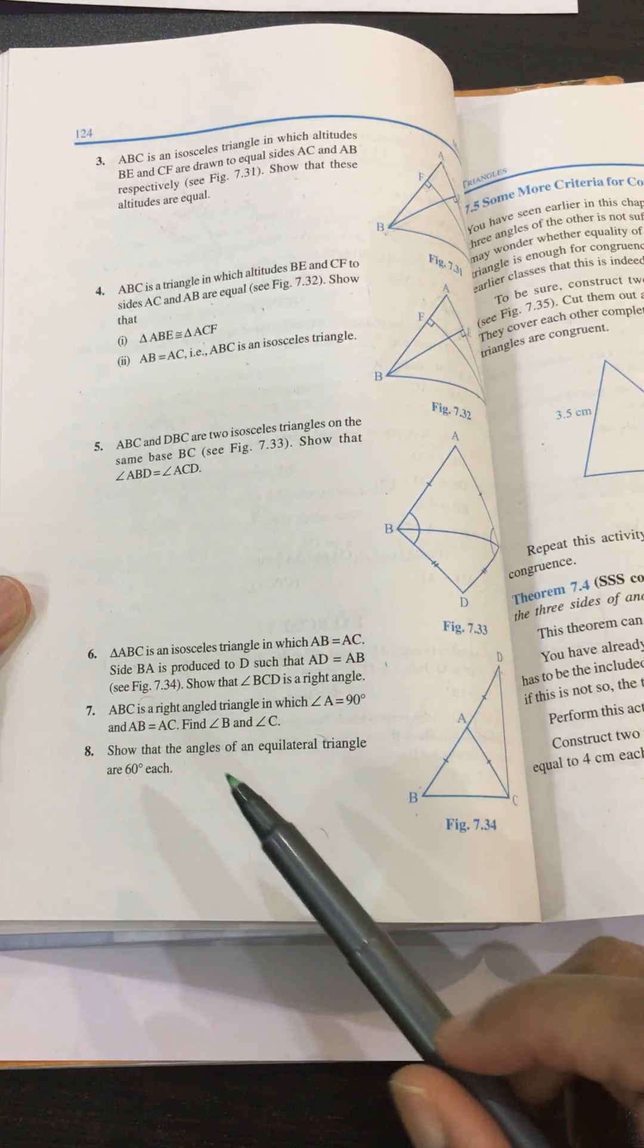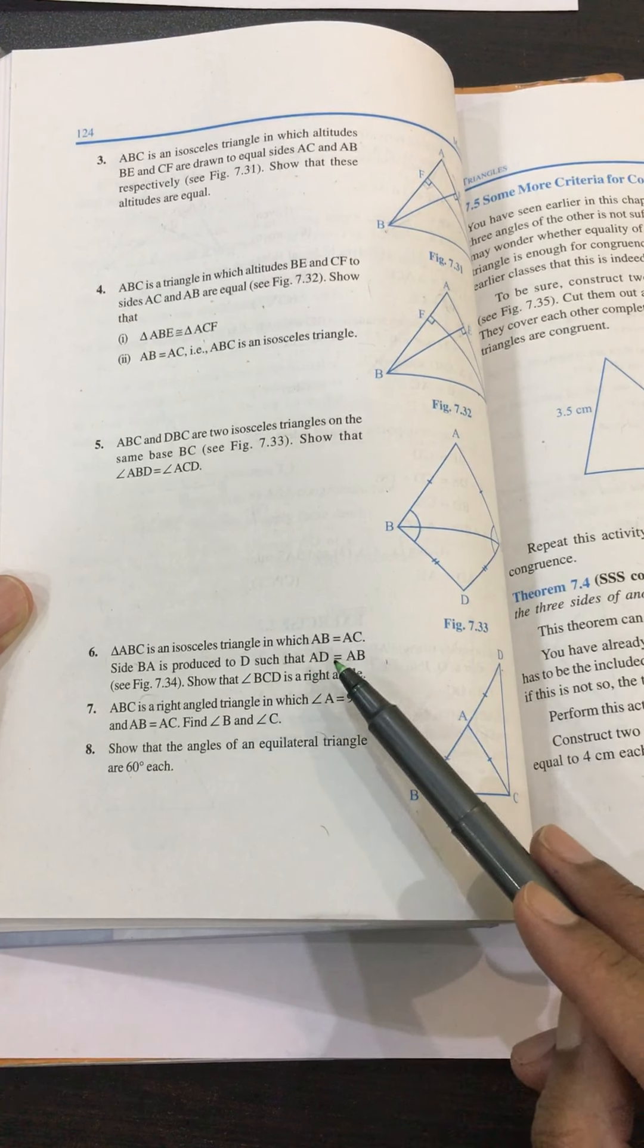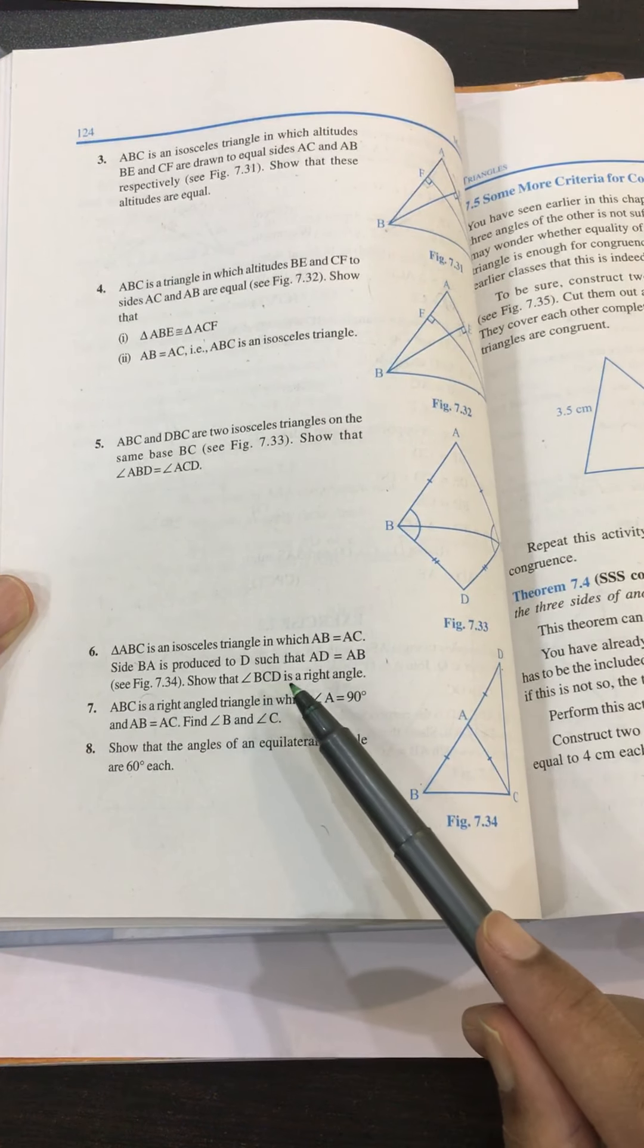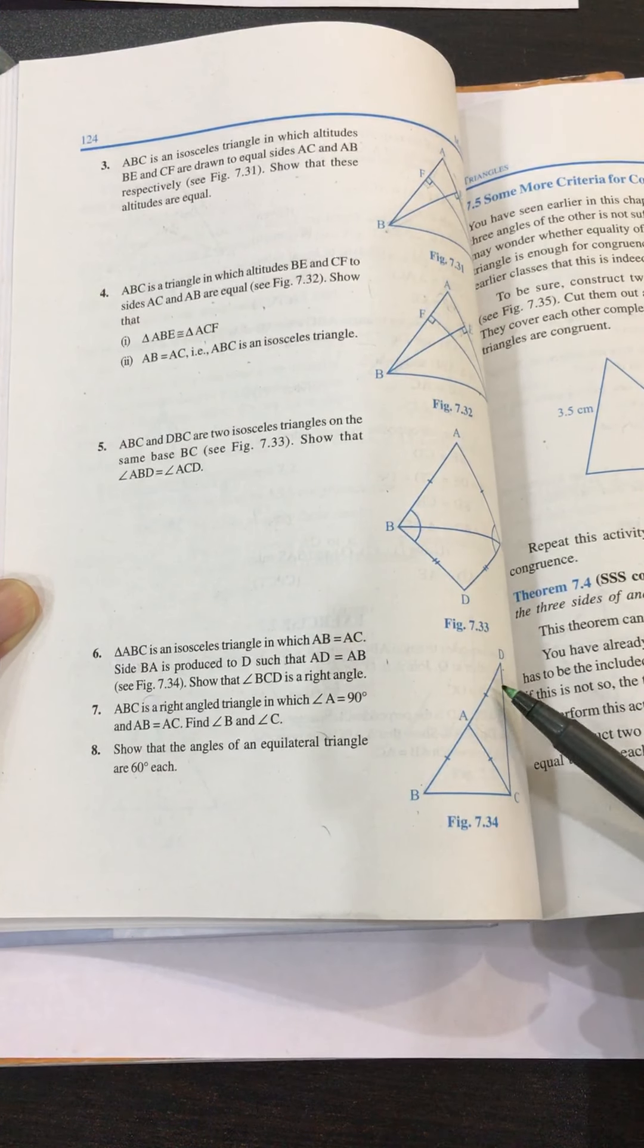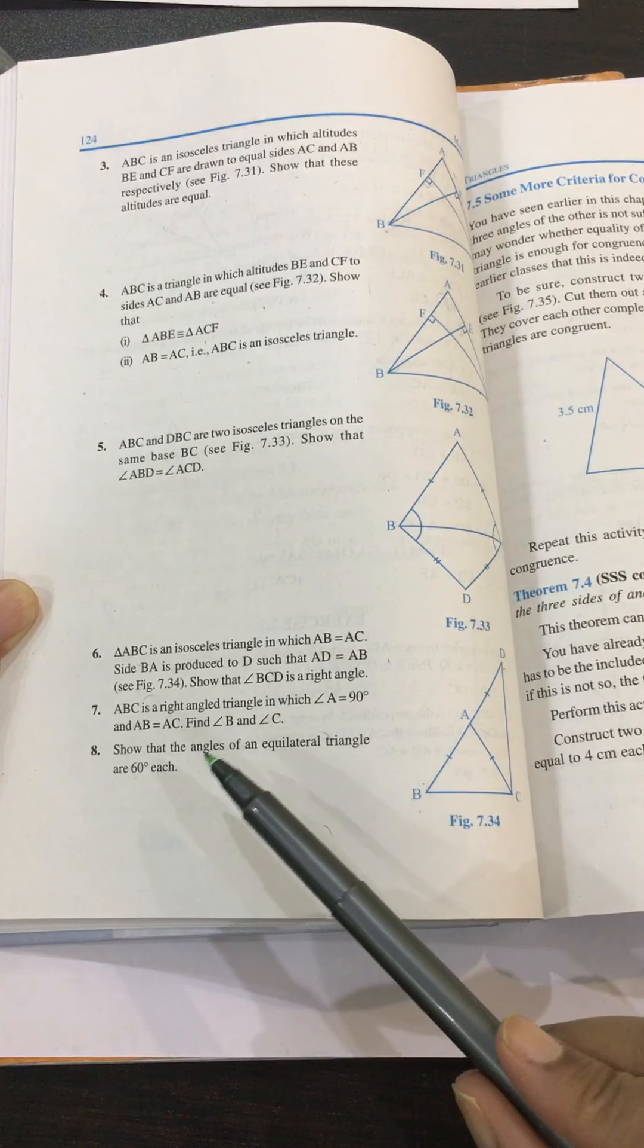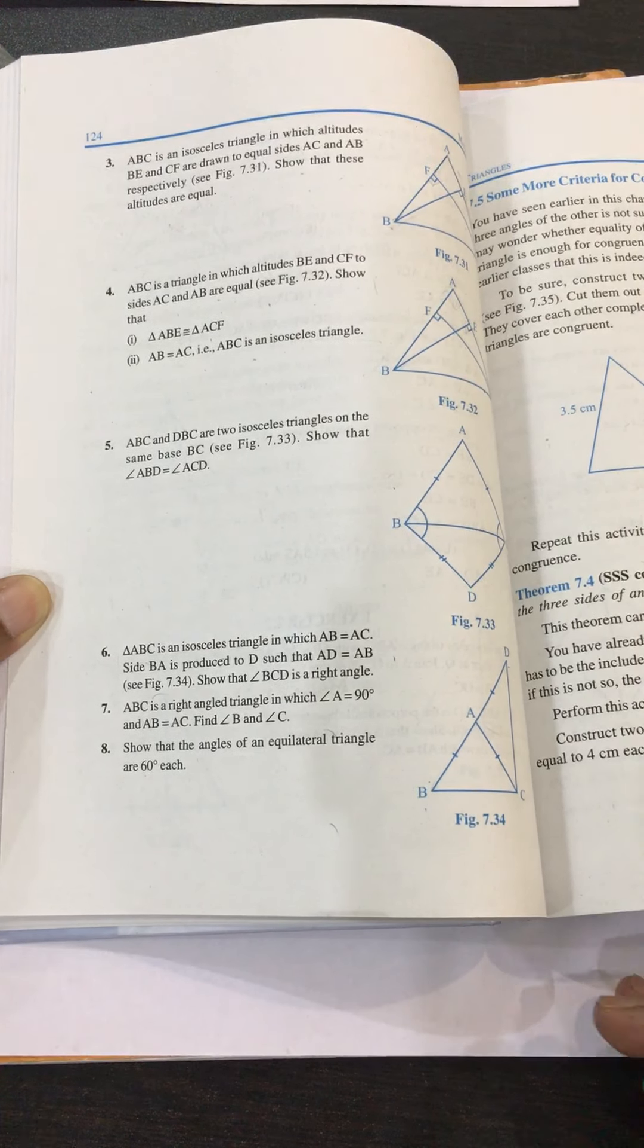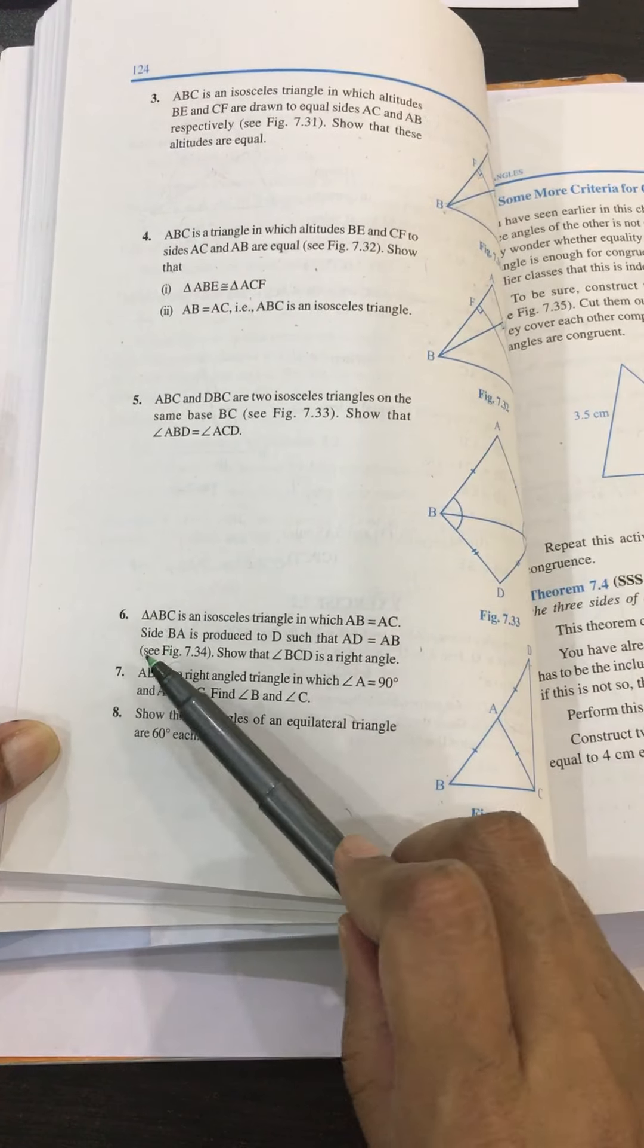Exercise 7.2, question number 6. Triangle ABC is an isosceles triangle in which AB equals AC. Side BA is produced to D such that AD equals AB. Show that angle BCD is a right angle.